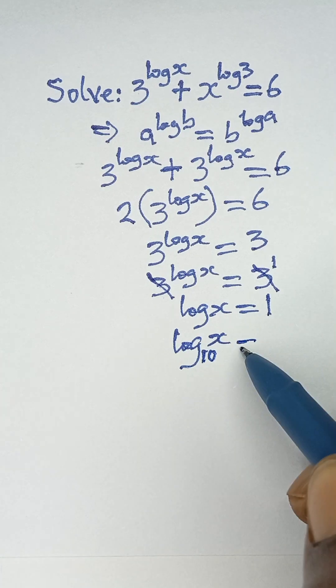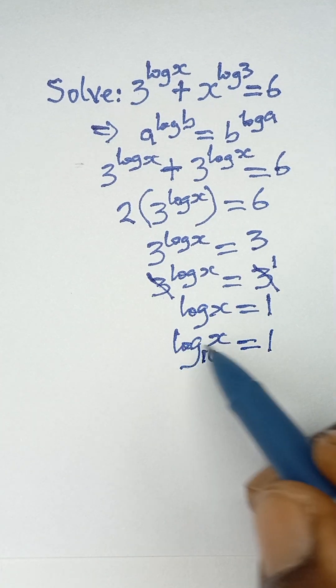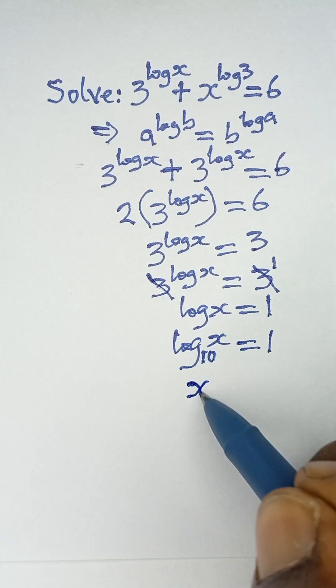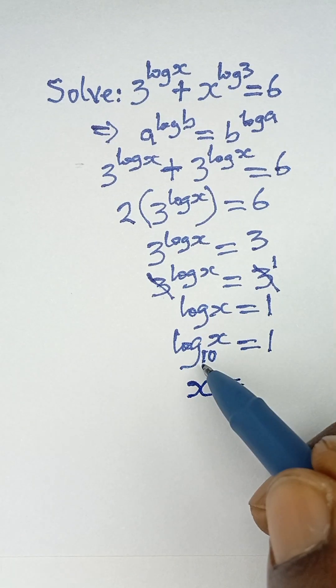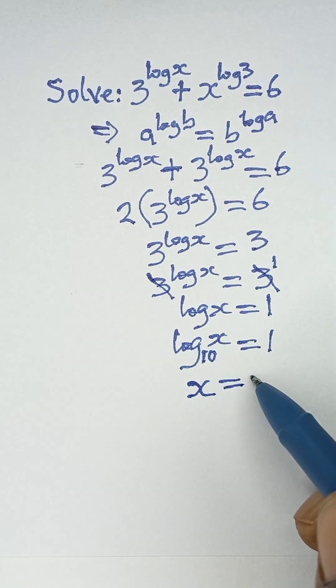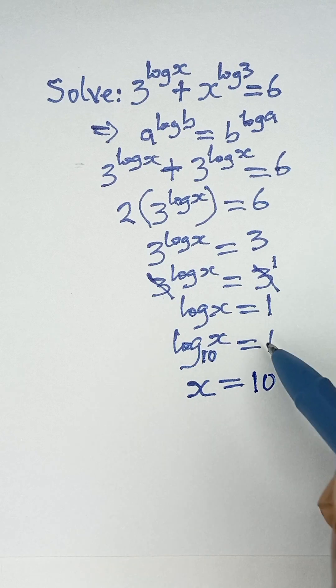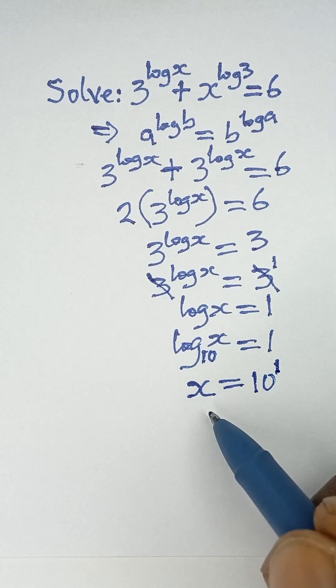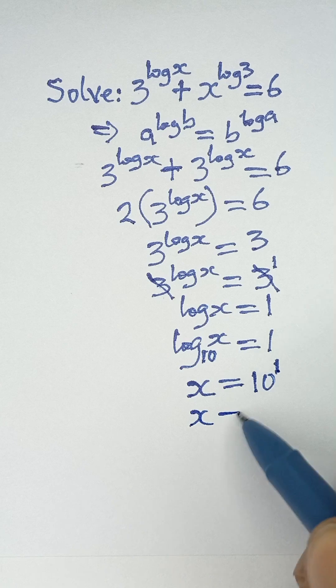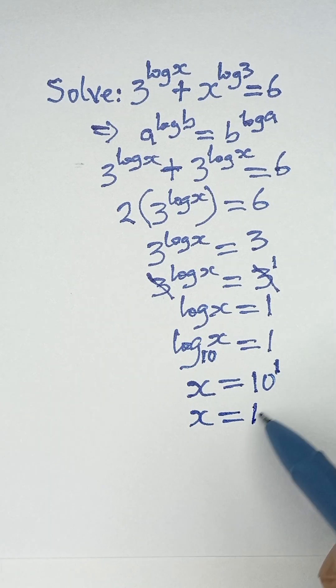We can convert this logarithm to exponential form. X will equal the base here, which is 10, raised to the power of 1. So finally, x equals 10 raised to the power 1, which is the same as 10. This is the final answer.